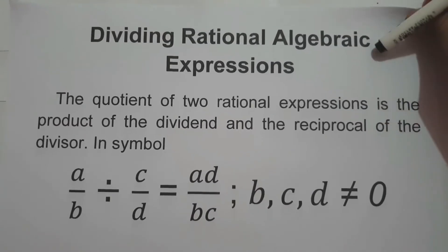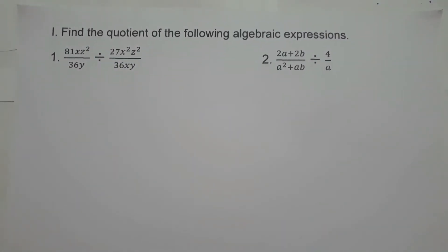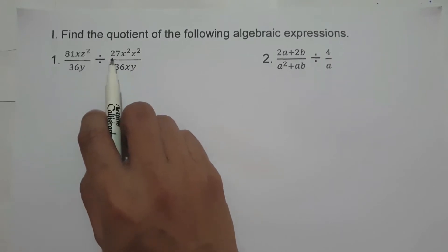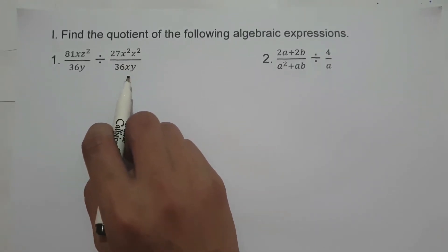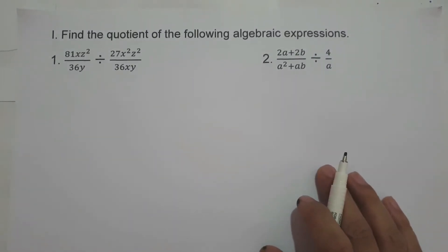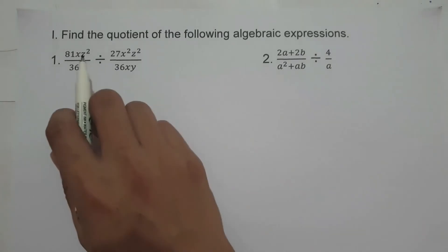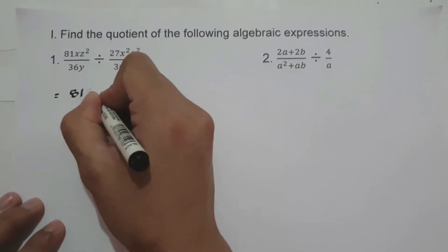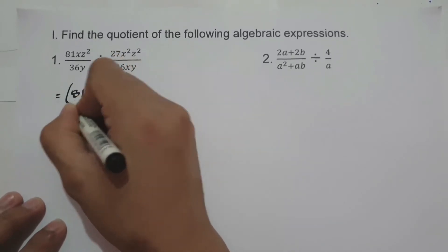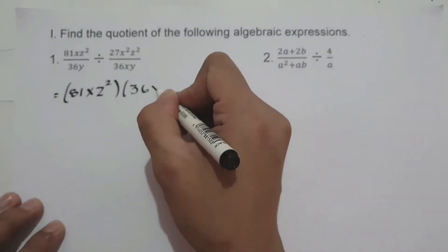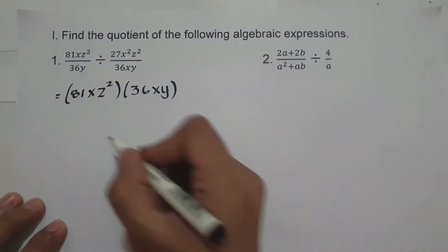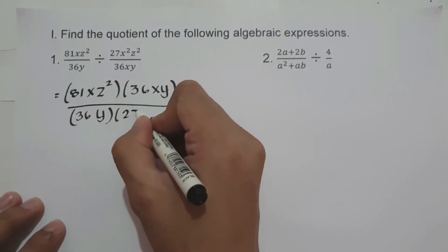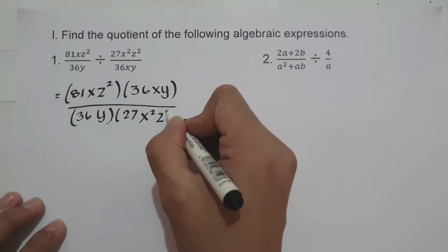So let's start and let's have an example. On number one, we have 81xz² over 36y divided by 27x²z² over 36xy. Whenever we divide rational algebraic expressions, we simply multiply numerator to denominator and denominator to numerator. So let's multiply 81xz² times 36xy over 36y times 27x²z².